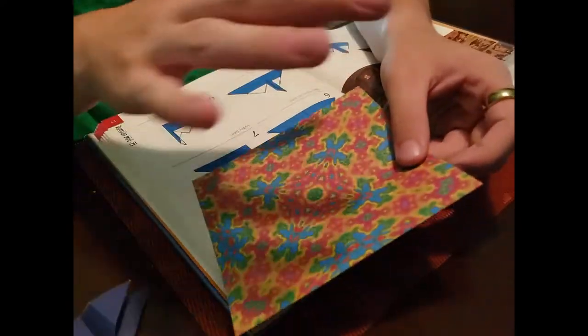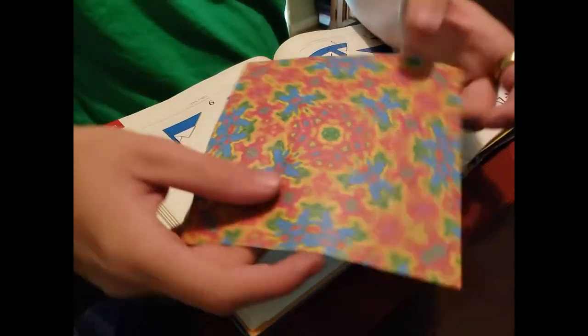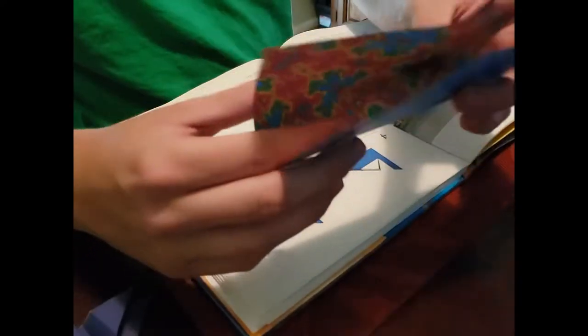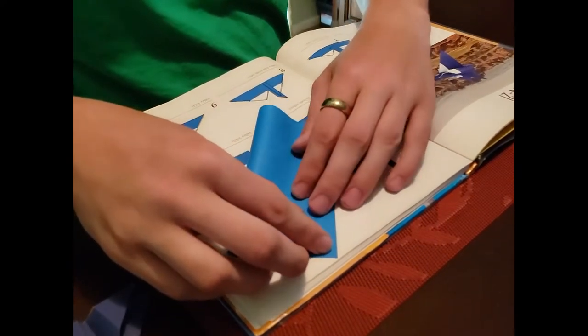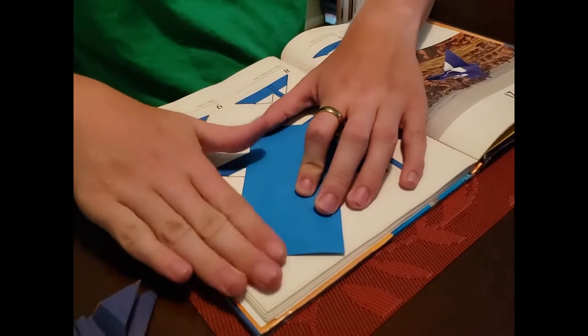So what you want to do is take whatever side you want on the inside and that's how you're going to fold it. So I'm folding mine to where the neat pattern side is on the inside of my fold. So now I can see that the outside is all blue.